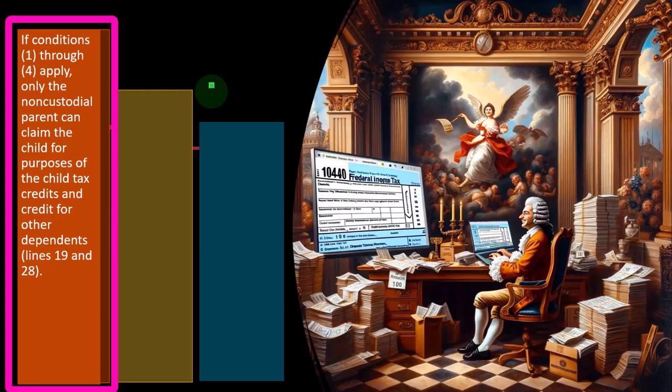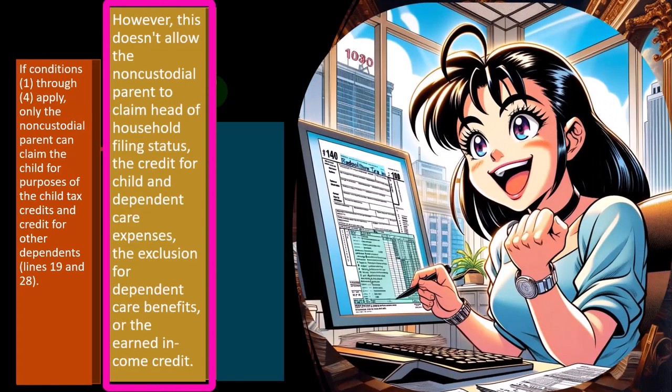If conditions one through four apply, only the non-custodial parent can claim the child for purposes of the child tax credits and the credit for other dependents — lines 19 and 28. However, this does not allow the non-custodial parent to claim head of household filing status. So there's a separation between these two conditions as to whether they qualify for head of household, which is largely dependent upon dependents. In a situation where the non-custodial parent is claiming the child, they may get access to the child tax credit but might not be able to count that child toward head of household.